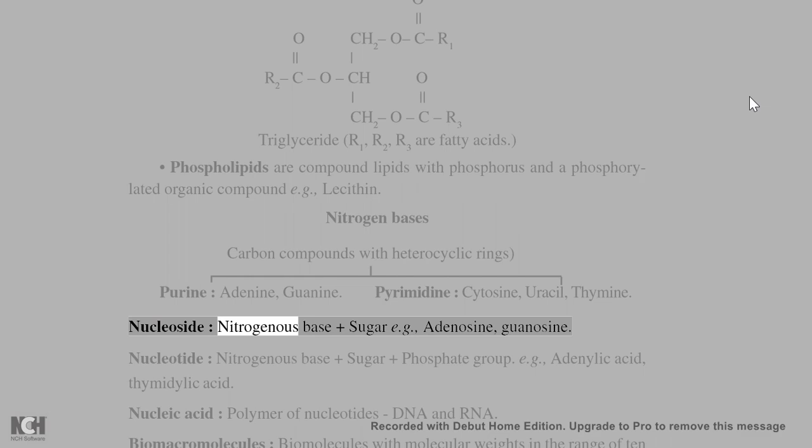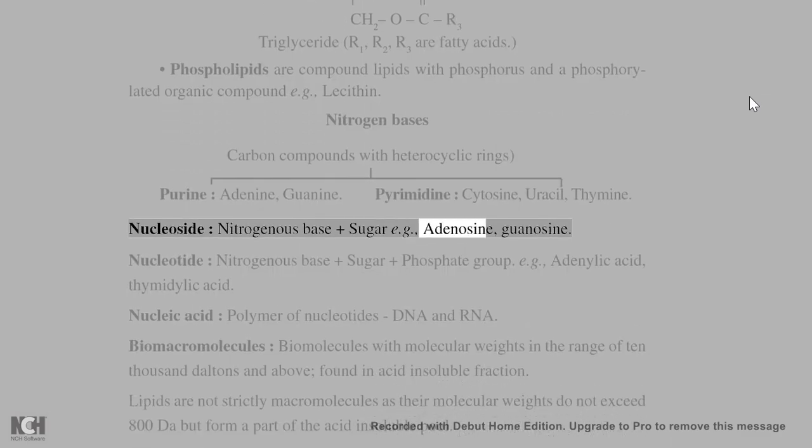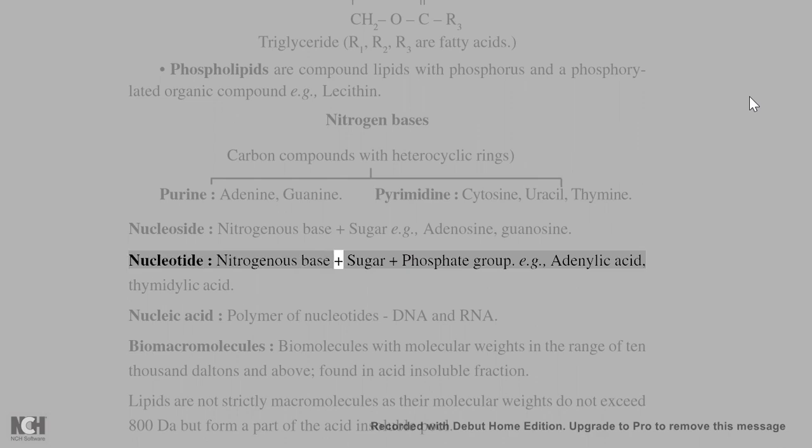Nucleoside: nitrogenous base and sugar, e.g., adenosine, guanosine. Nucleotide: nitrogenous base and sugar and phosphate group, e.g., adenylic acid, thymidylic acid. Nucleic acid: polymer of nucleotides, DNA and RNA.